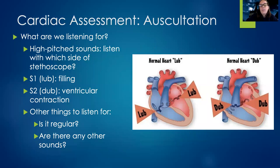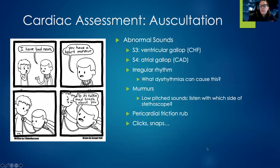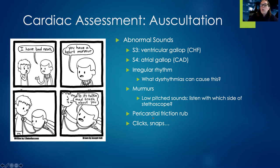We're going to listen for heart sounds — this takes time and experience. Basically, you're listening for a lub-dub with a regular rhythm. Abnormal findings include extra sounds like lub-lub-dub, or an irregular rhythm. At a novice level, you want to be able to identify when something sounds abnormal. A murmur often sounds like a whoosh instead of a lub-dub. A friction rub sounds like sandpaper grating against a surface. Any abnormal sounds like clicks or snaps are also noteworthy.